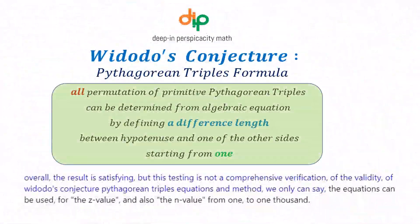Overall, the result is satisfying, but this testing is not a comprehensive verification of the validity of Widodo's conjecture Pythagorean triples equations and method. We only can say the equations can be used for the Z value and also the N value from 1 to 1000.